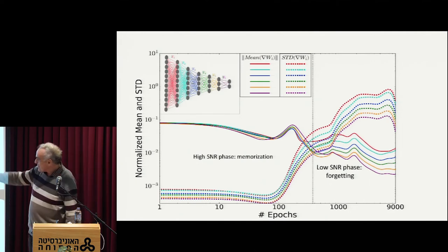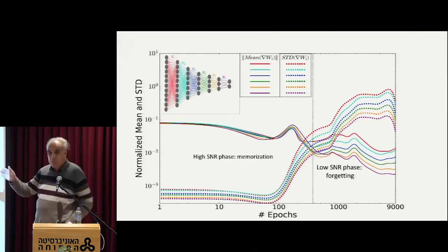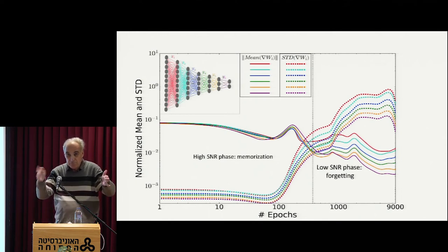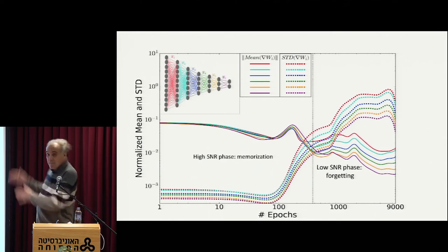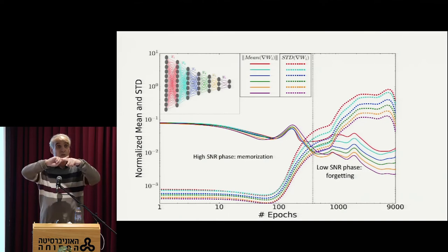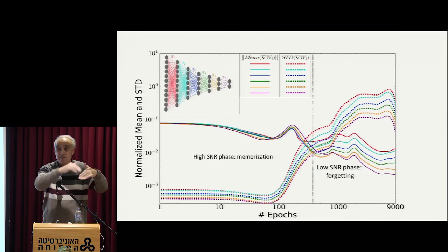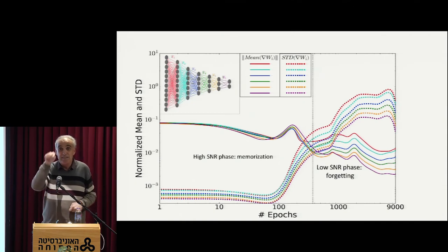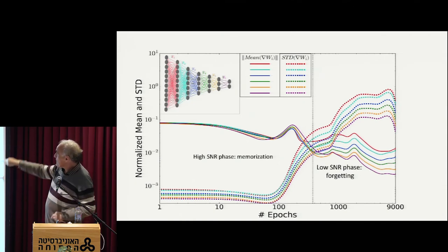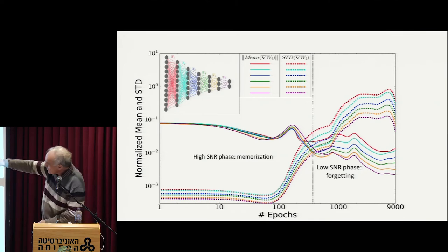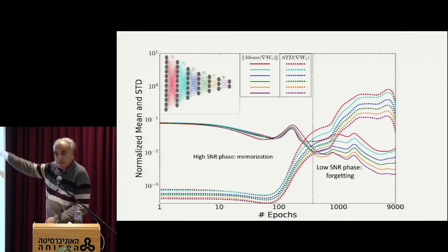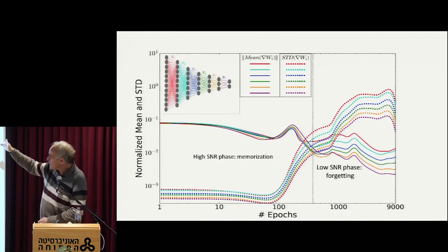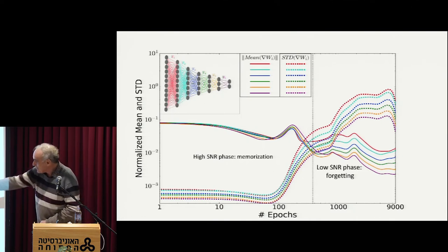In the log-log plot of number of epochs, you see the mean absolute value of the gradient per weight, and the standard deviation calculated over the mini batches — over the fact that I cut my data into many pieces. And you see in different colors for each layer the mean and the standard deviation. At the beginning, the gradients are very clean — about two decimal orders of magnitude signal-to-noise ratio, which is really very nice, 20 dBs.